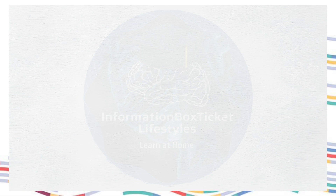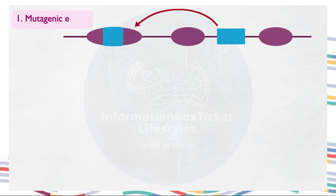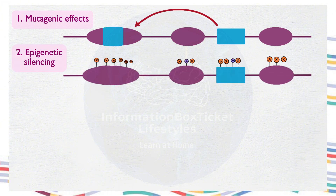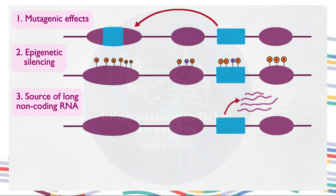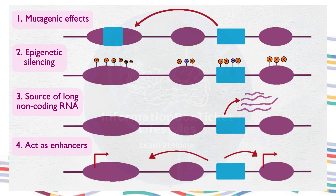Retrotransposons, like other transposons, can have various effects on the genome. Firstly, they may induce mutagenic effects by jumping from one location to another, whether retroviral or non-retroviral. For instance, if a retrotransposon inserts itself into the middle of an exon, it can disrupt the coding frame, leading to potential mutations. Additionally, retrotransposons can contribute to epigenetic silencing mechanisms. They can also serve as a source of long non-coding RNA and act as enhancers, thereby regulating transcription. In summary, retrotransposons exhibit multiple functions within the genome.